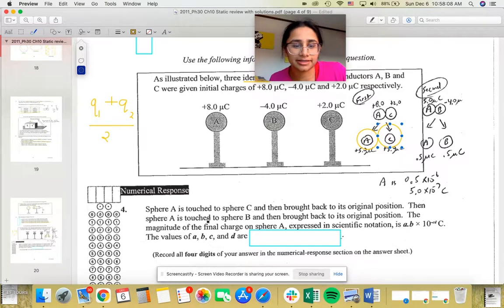Now when the second part says that sphere A is touched to sphere B and then brought back to its original position. So now we're going to be touching that plus 5 microcoulomb charge to the negative 4 microcoulomb charge and then dividing it by 2. So what we're going to get in that case is 5 plus minus 4, which is minus 1, divided by 2, which is 0.5 microcoulombs. So that's going to be the charge on both A and on B.